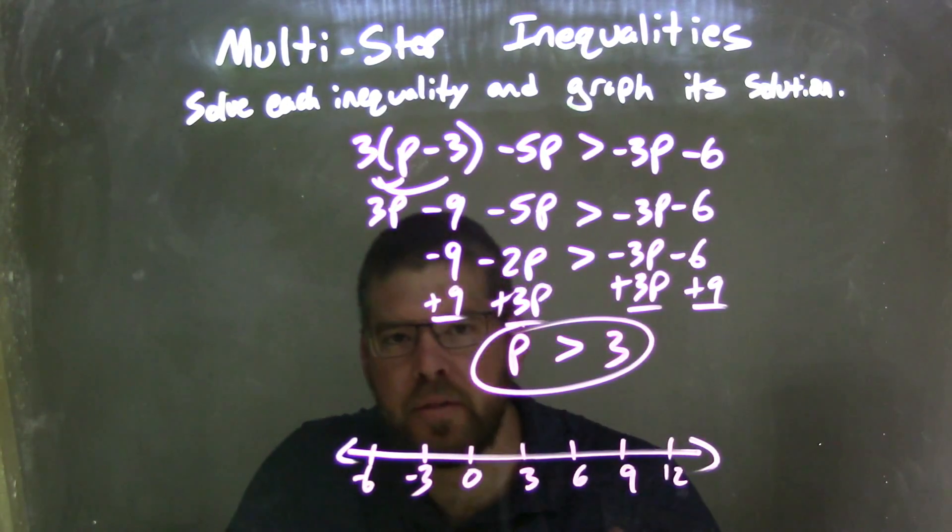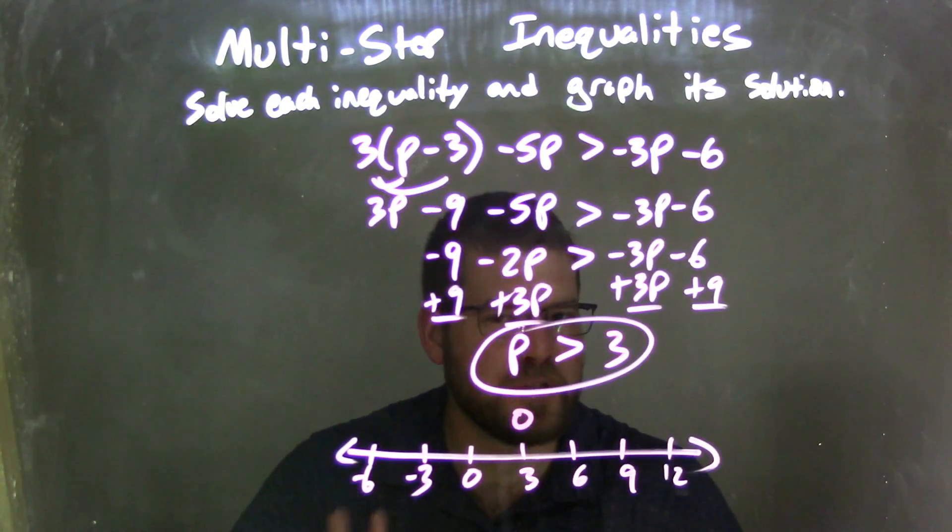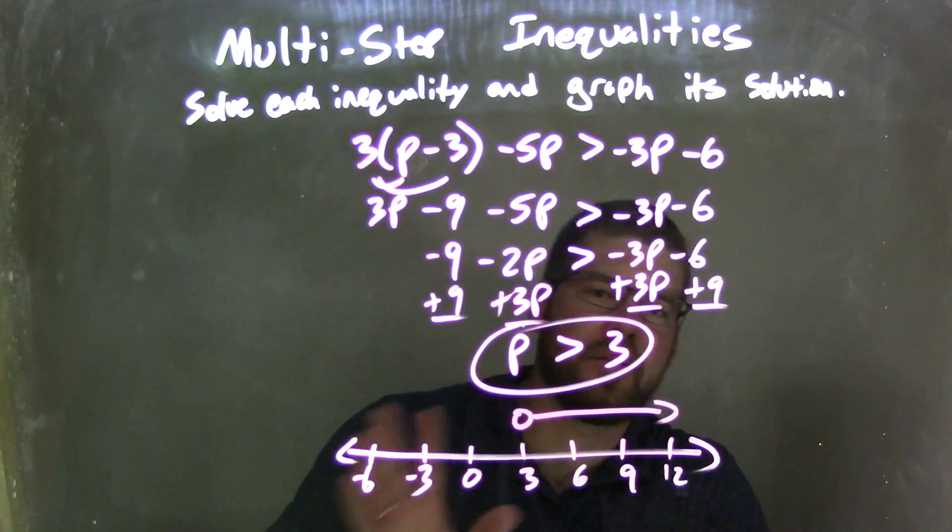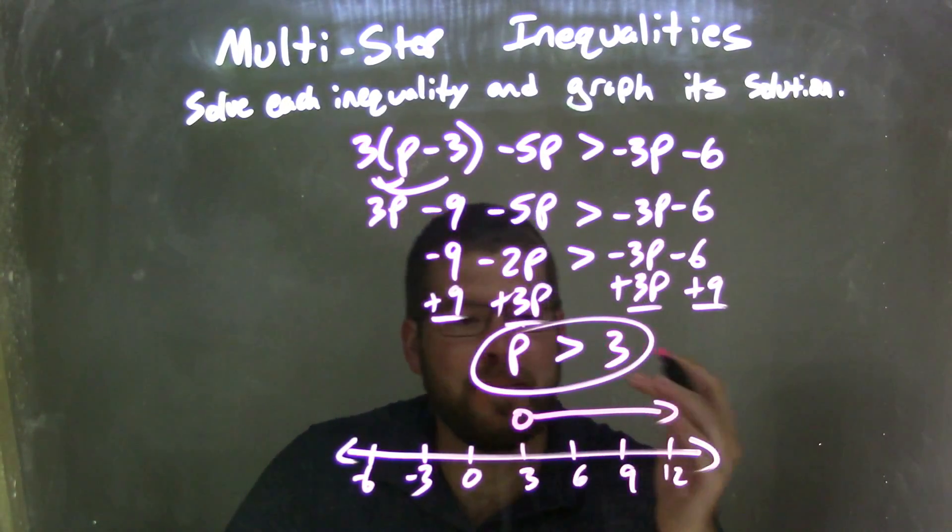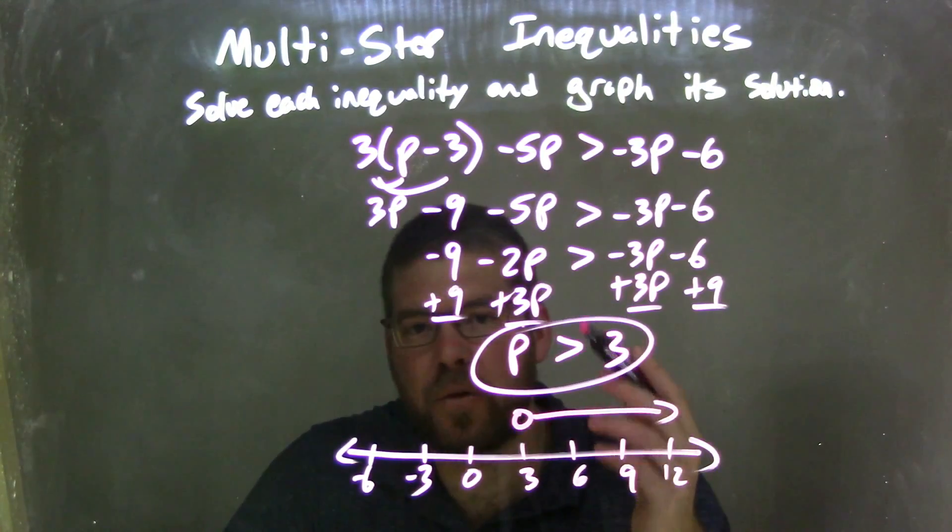Well, since p is greater than 3, we have an open circle at 3 because it's not equal to, just greater than. And then I put my arrow to the right, stating that all these values here to the right is what p can be, and those p values are going to be greater than 3. So my graph matches my answer, which is p is greater than 3.